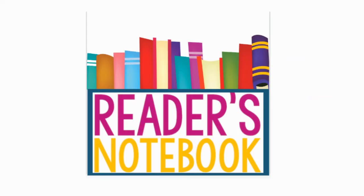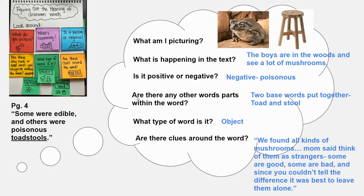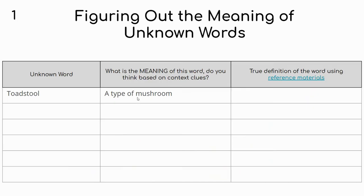Now I go into my reader's notebook. I did all that thinking, but now I have to put it down somewhere. I'm going into my digital reader's notebook and going to page one, which is the figuring out the meaning of unknown words page, and I'm just going to start filling in what I can. Unknown word: toadstool. What is the meaning of the word based on context clues? Based on all of this thinking I did out loud with you, I think it's a type of mushroom.